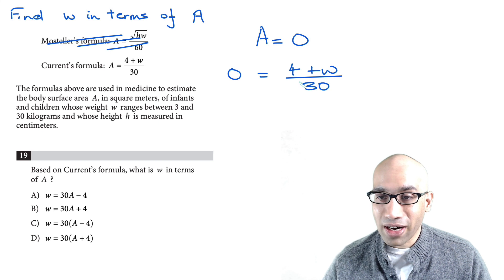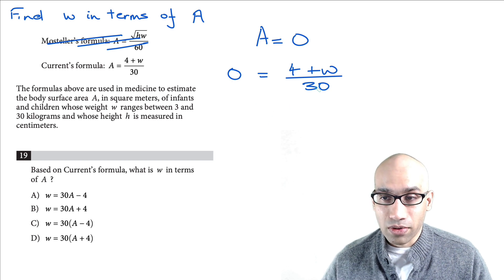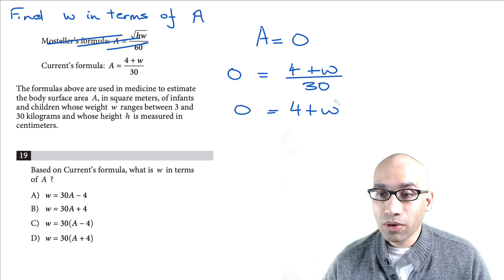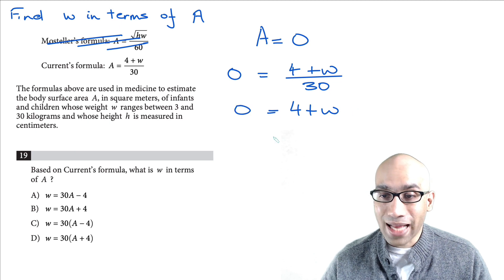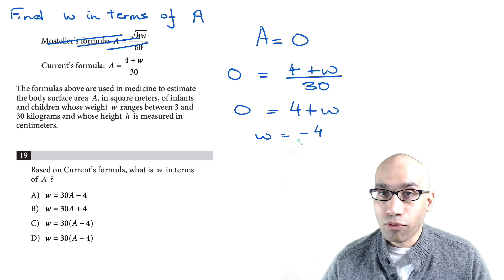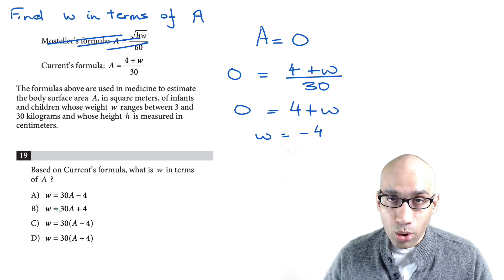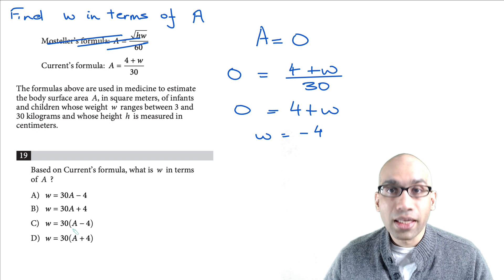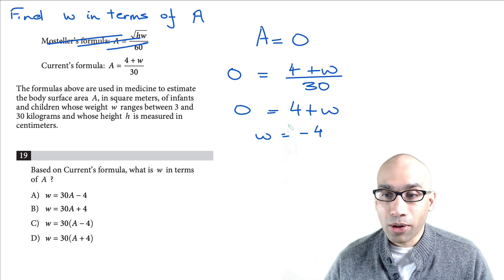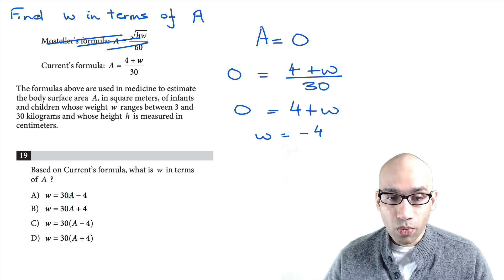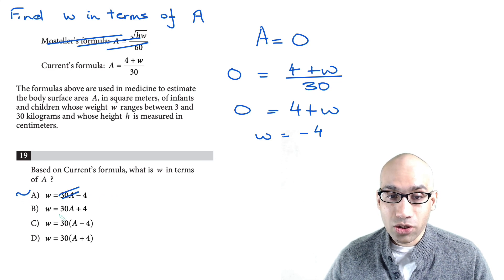Simplifying, 30 moves over so you get 4 + w equal to 0, which means w equal to negative 4. Now try all of the answer choices and see which satisfies this. When you put a equal to 0 in one choice, you immediately get w equal to negative 4 — so that's a possible answer.